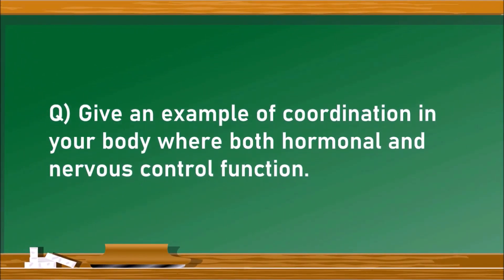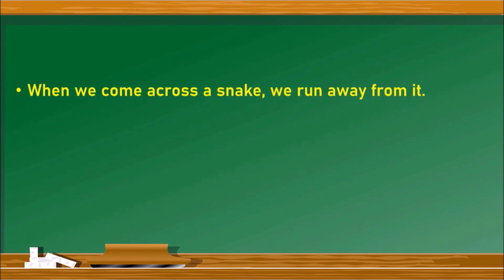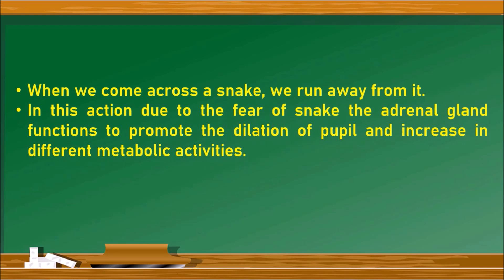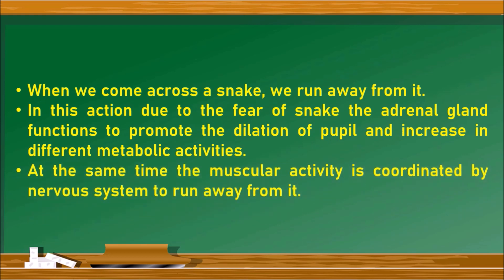Give an example of coordination in your body where both hormonal and nervous control function. When we come across a snake, we run away from it. Due to fear of the snake, the adrenal gland functions to promote dilation of the pupil, increase of heart rate, and an increase in different metabolic activities. At the same time, the muscular activity is coordinated by the nervous system to run away. So the nervous system as well as the hormonal system both work together to make us run away from the danger.